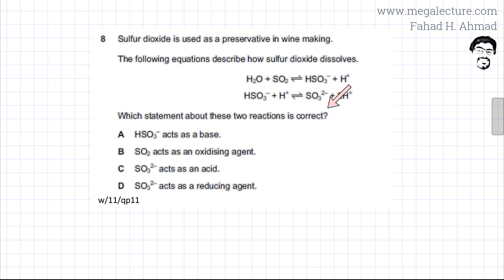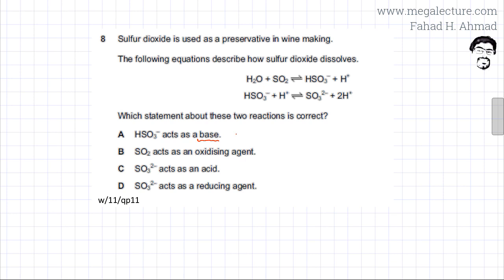The first statement is that HSO3⁻ ion acts as a base. Remember, a base is a substance that accepts H⁺ ions. So we need to figure out whether HSO3⁻ is accepting H⁺ ions. Looking at the first equation and its backward reaction, we can assess this.